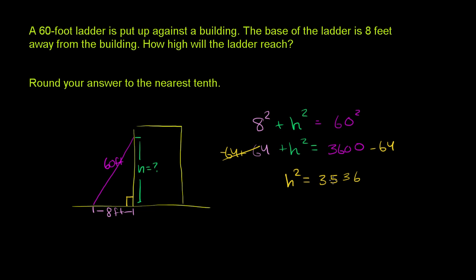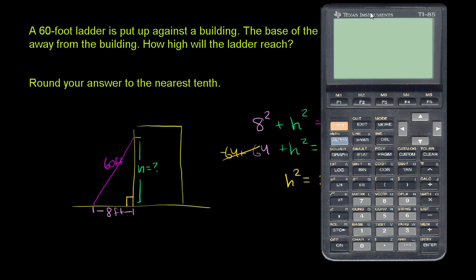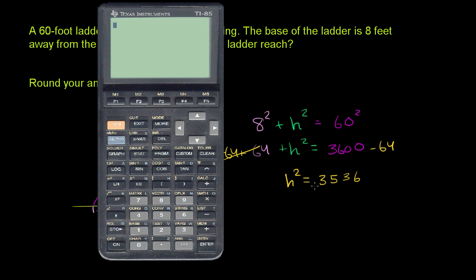This doesn't pop out as a perfect square, so let's take a calculator out. We want to take the square root of 3,536. Press second, then square root. Square root of 3,536 equals 59.46.